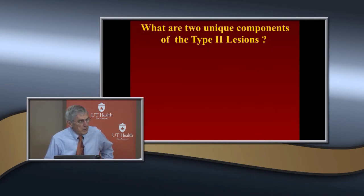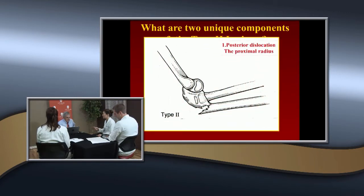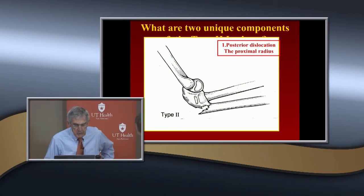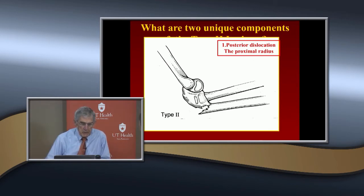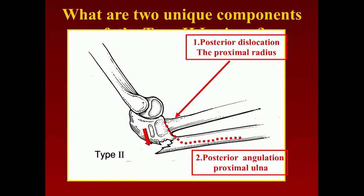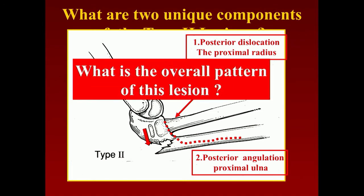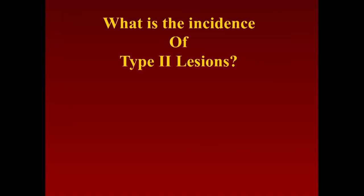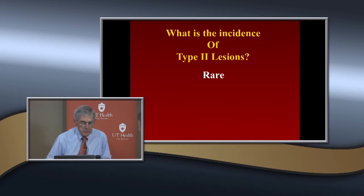The overall injury pattern of Type 2 is one of flexion. Type 2 lesions are very rare — when writing our first edition fracture textbook, I could find only one reported pediatric case. In 40 years working with children's fractures, I've accumulated about 10. They commonly present as equivalents, as described by Bado — fractures associated with Monteggia-type patterns.